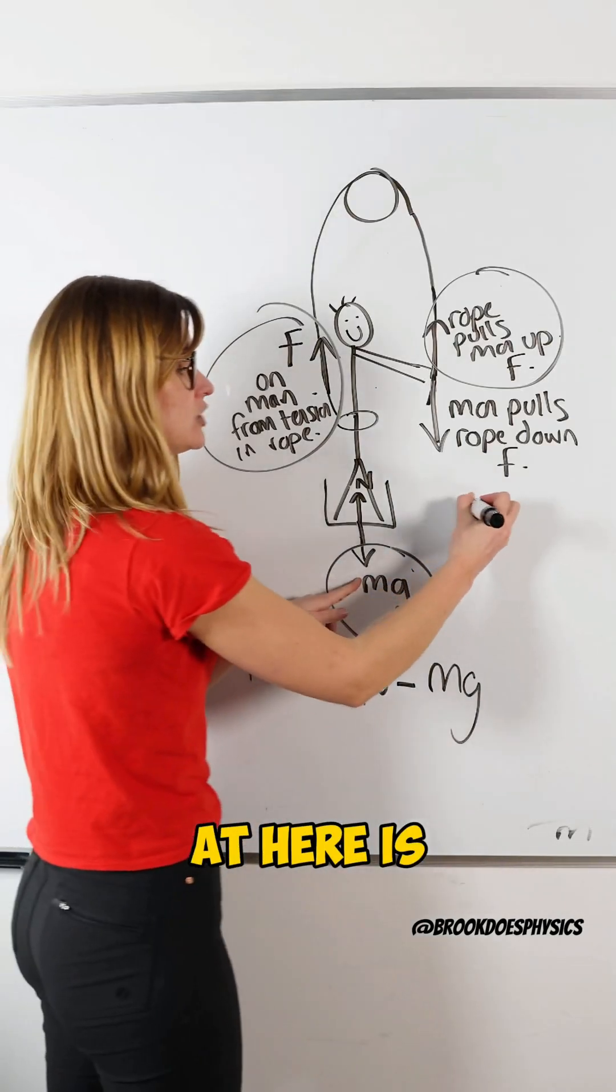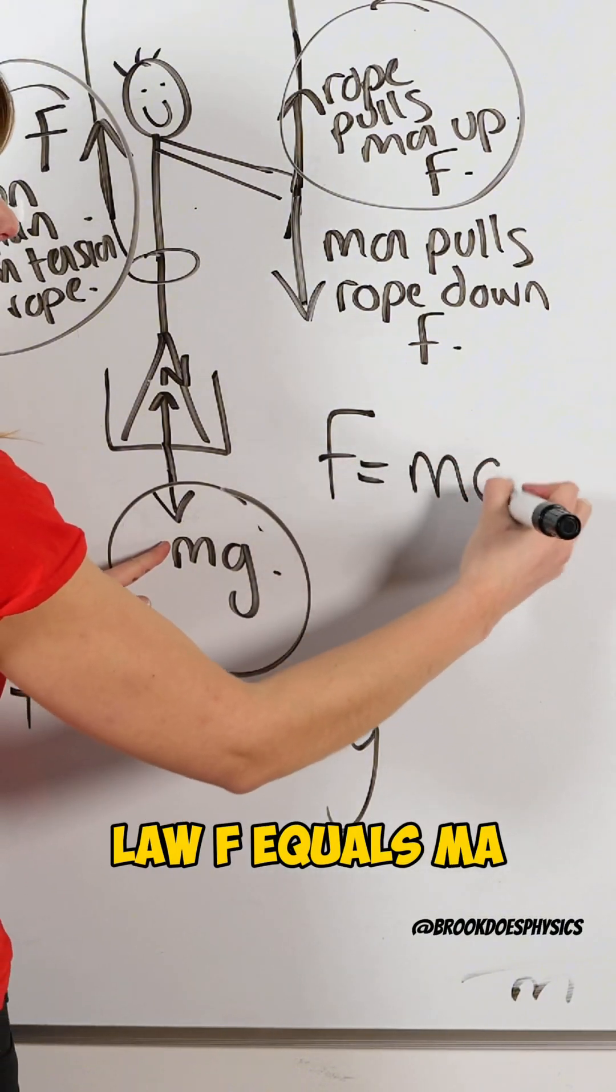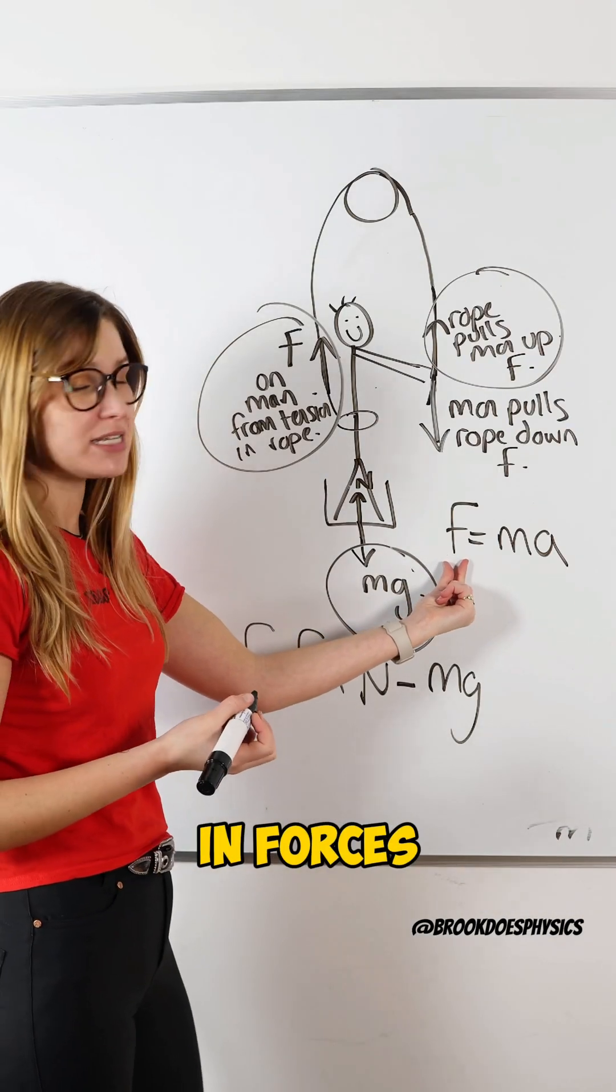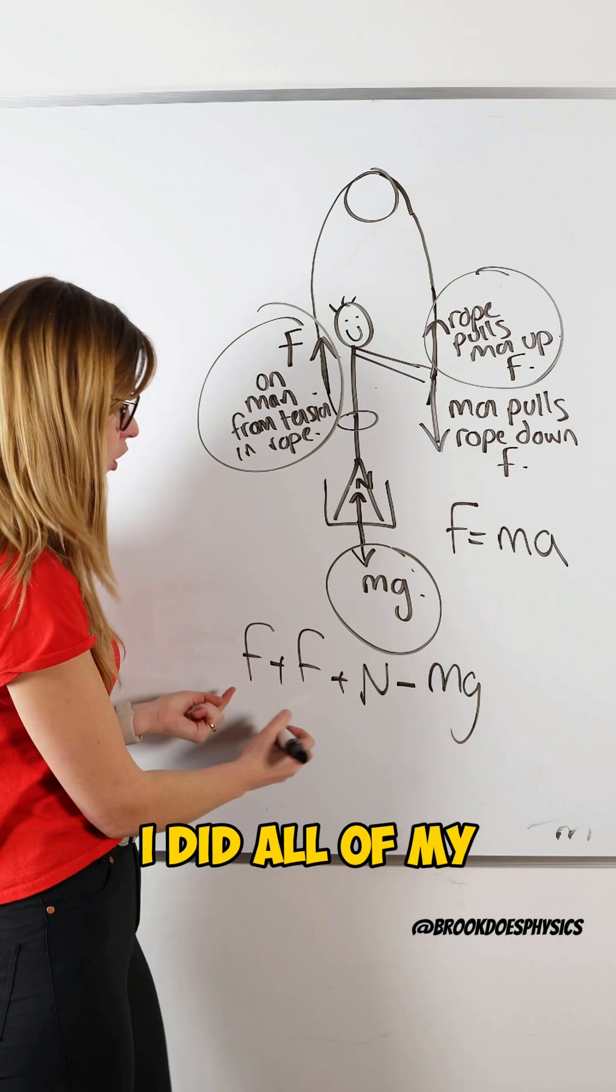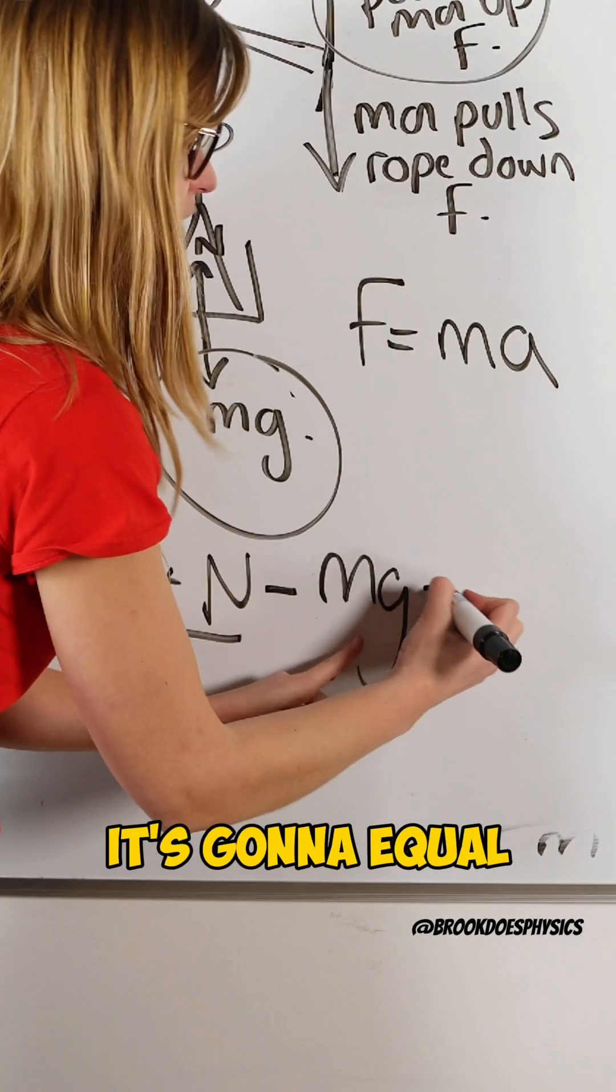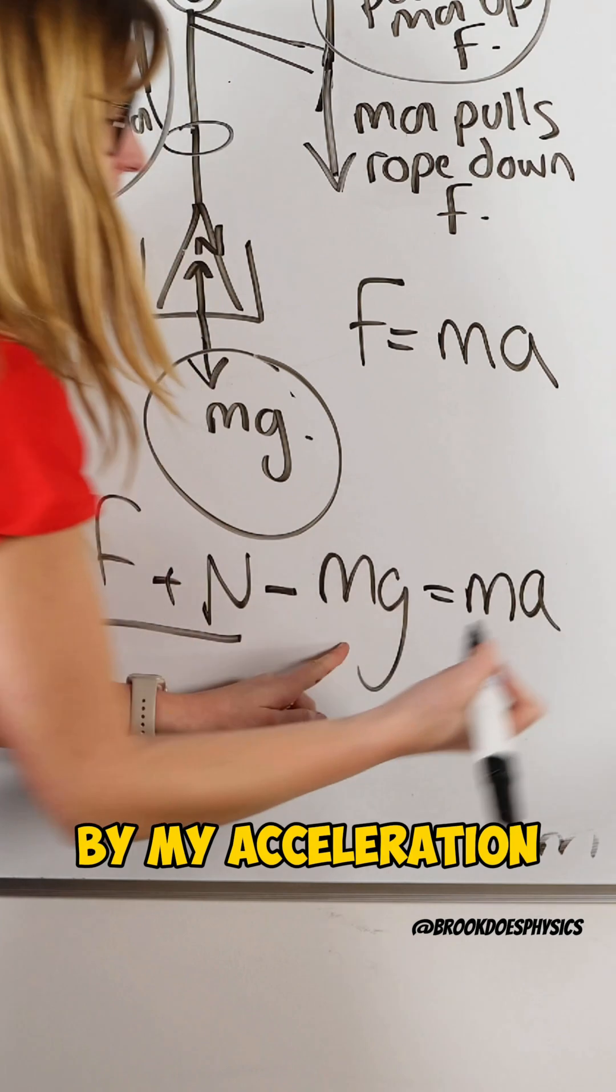So what we're looking at here is Newton's second law, F equals Ma. The resultant force or the difference in forces is equal to mass times acceleration. So the difference in forces, all of my upward forces minus my downward forces, is going to equal my mass times my acceleration.